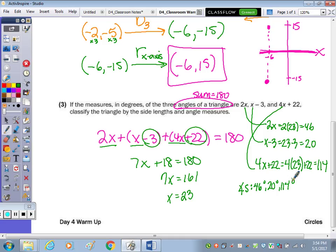Let's start by classifying according to side lengths. Because all angles are different, all sides must be different. So that's a scalene triangle. And by angles, because we have one angle that's greater than 90, this would be an obtuse triangle. So it's scalene and obtuse.